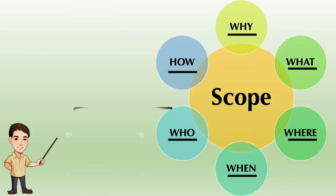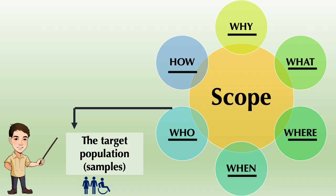The fifth W is who, and the population from which they will be selected should be briefly reflected in this section. Who will be the respondents or participants of the research project?